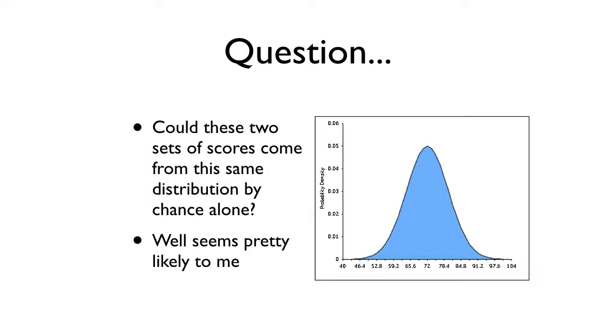Because what we have on this axis, on the y-axis, is, I don't even know what that is. Probability? Yeah. It's how likely a score is, basically. And when things are in this big part of the curve, we think they're likely.